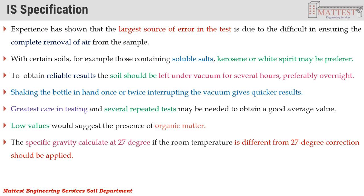A low value suggests the presence of organic matter. The specific gravity is calculated at 27 degrees Celsius. If the room temperature differs from 27 degrees, a correction should be applied.